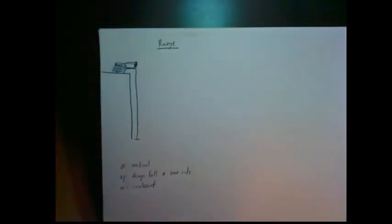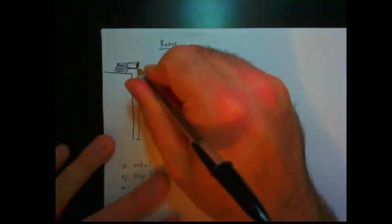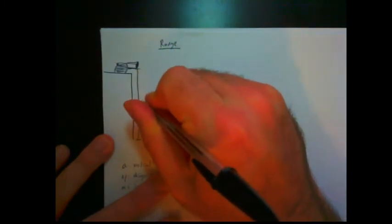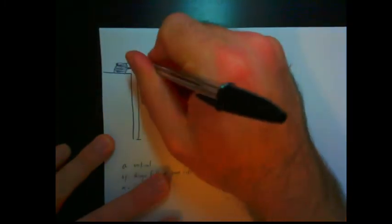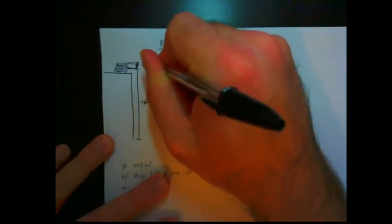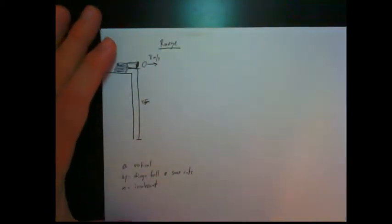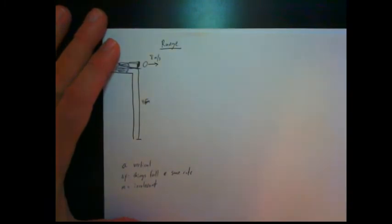Now this cannon may not look like it's pointing completely horizontally. This cannon is, let's say, from the barrel of the cannon to the ground, let's say it's about 45 meters high. And let's say it fires a cannonball at a rate of 8 meters per second. So let's use this knowledge we have from yesterday to figure out how far it goes.